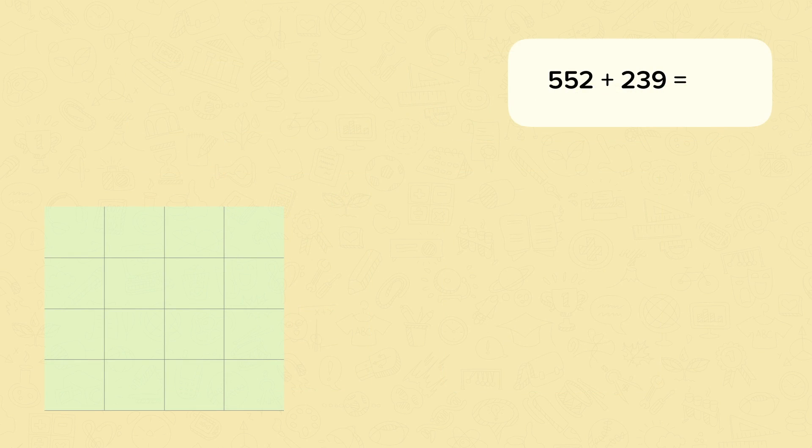Now let's have a look at a slightly more challenging one. This example is going to use exchange. So 552 add 239. We set it out with the digits in the right column.